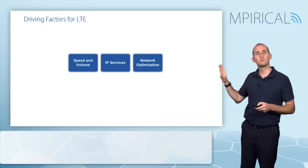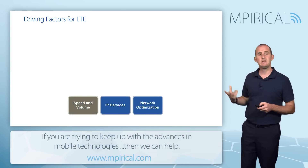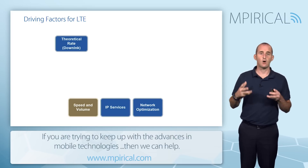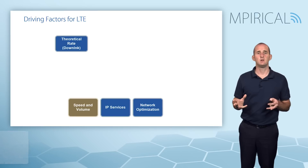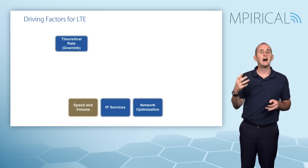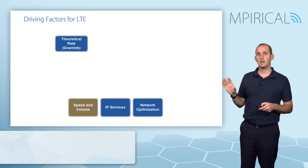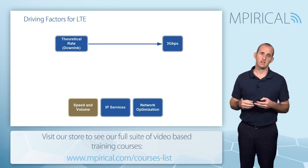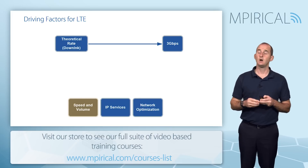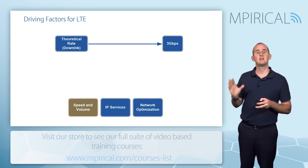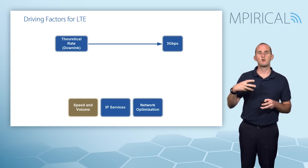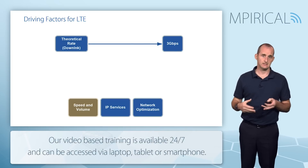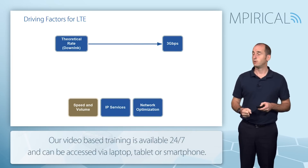We're considering three driving factors in this session. Starting with speed and volume: there is an insatiable appetite for mobile broadband at this present time — high capacity and high data rates. From a downlink perspective, with the latest LTE Advanced specifications, theoretically we're looking at about three gigabits per second in the downlink.